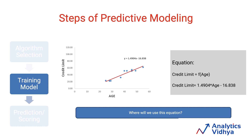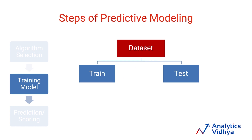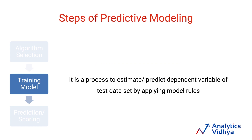This equation is used to predict the dependent variable in the dataset. We simply pass the value of age from the test data to obtain the predicted credit limit. The dataset used for predictive modeling is divided into two parts: training data and test data. The training data is used to train the model and consists of outcomes which are known. The test data does not contain the value of the dependent variable and is used to make predictions and score our predictions.